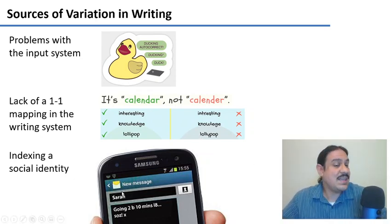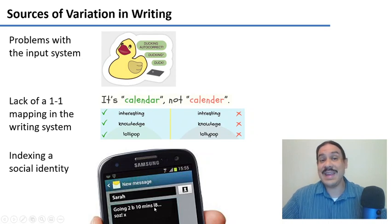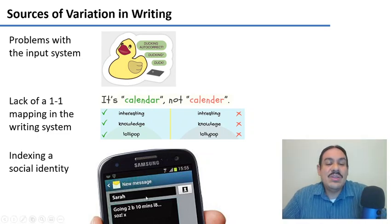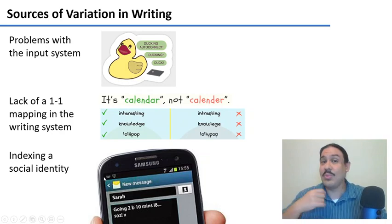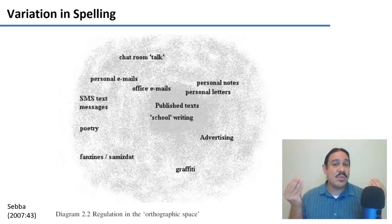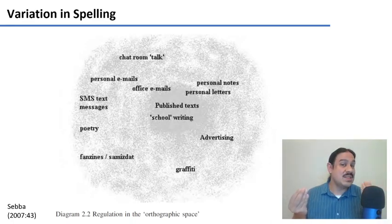Another source of variation is that writing can be an index of social identity. For example, you might write that you're going to be 10 minutes late as 'L-8' instead of 'L-A-T-E'. When you're doing this, you're probably not sending this to your professors or in a formal letter — you're writing it to your friends in an informal context. Remember how in speech we have formal and informal contexts? Giving a talk in class is very formal, whereas chatting with friends is informal.